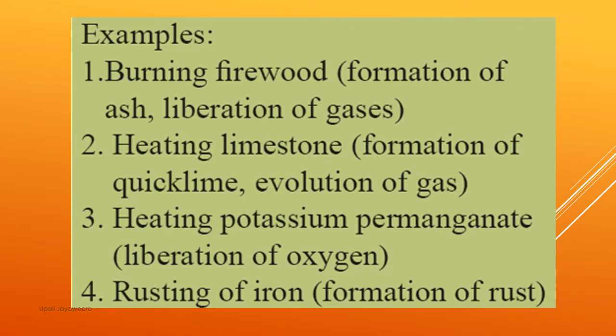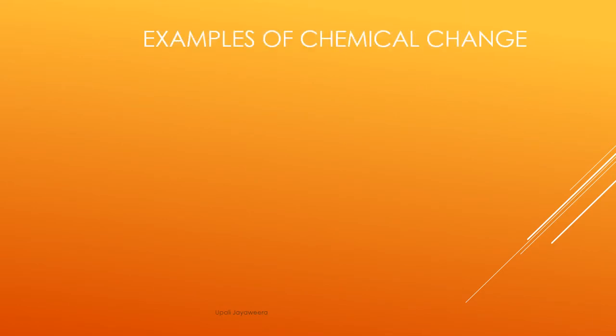Now we'll see some examples. Burning firewood: when firewood is burned, formation of ash and liberation of gases occur. Heating limestone: when limestone is heated, quick lime is formed and carbon dioxide is evolved. Heating potassium permanganate: when potassium permanganate is heated, oxygen is liberated and other chemicals are formed. Rusting of iron: when iron rusts, rust is formed on the iron and other chemicals are formed.